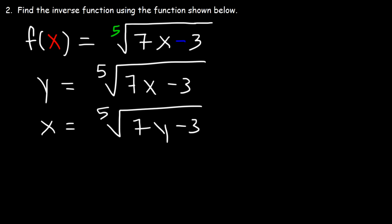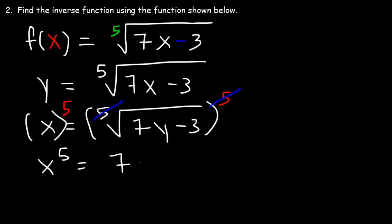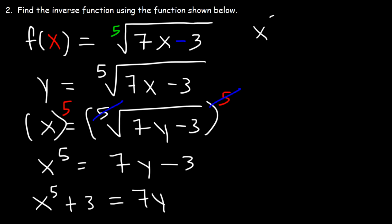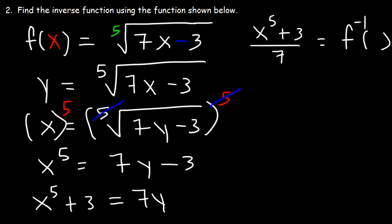In order to get rid of the radical, we need to raise both sides of the equation to the fifth power, so that these two will cancel. So right now we have x to the fifth is equal to 7y minus 3. Now let's add 3 to both sides. So x to the fifth power plus 3 is equal to 7y. And then divide both sides by 7. So x to the fifth plus 3 divided by 7 is equal to y, which is also equal to the inverse function. And so this is the answer.